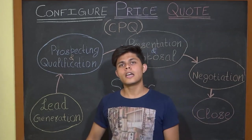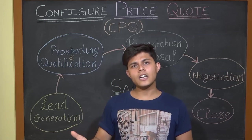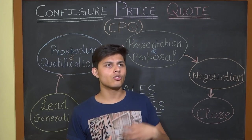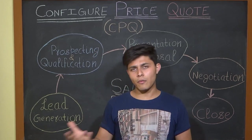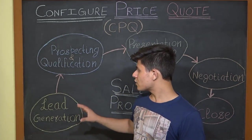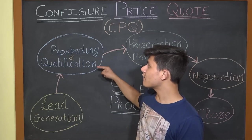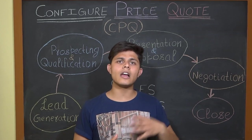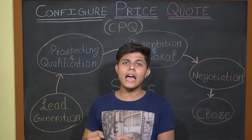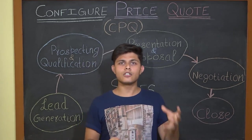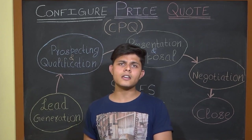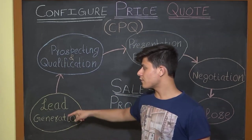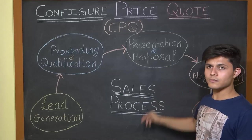Then comes the second step: prospecting and qualification. After lead generation, you have information of lots of people — leads can come from email marketing, social media marketing, or a purchased list. From that bulk of leads, you need to qualify them by contacting them. For example, if you have 100 leads, you need to figure out who is actually interested in your product, and filter out the unqualified ones.